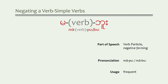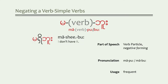Let's first look at a positive statement that uses a one-syllable simple verb. 'I have it' — shide. To turn this into a negative statement, remove the final particle and place a particle before and after the verb. To say 'I don't have it,' say ma-shi-boo. Let's see how it works with a few other simple verbs.